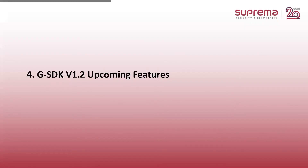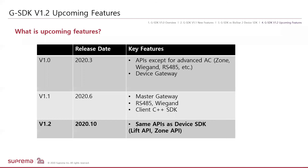Lastly, let me cover the plans for GSDK version 1.2. In the comparison between device SDK and GSDK, it does not yet provide all the advanced features like device SDK. From GSDK version 1.2, it will be the first version with equivalent APIs including lift API and zone API as provided by device SDK. The current plan is to release before October 2020.